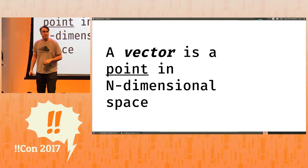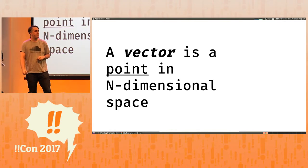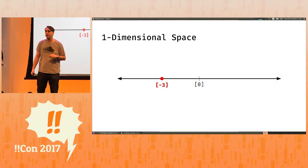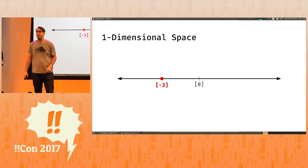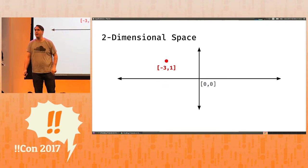Vectors. Without going into the axioms of a vector space, a vector is a point in n-dimensional space relative to an origin. For example, here is a vector in one-dimensional space, it's a point on a line relative to this zero. Here is a vector in two-dimensional space, it's a point on a sheet of paper.